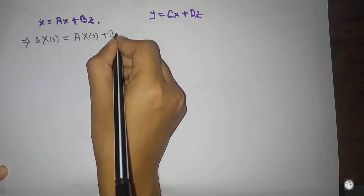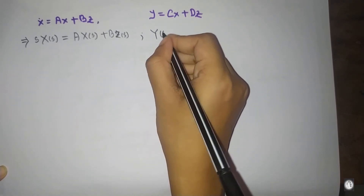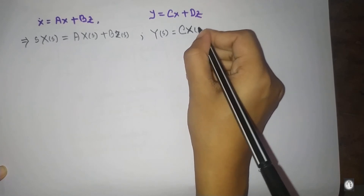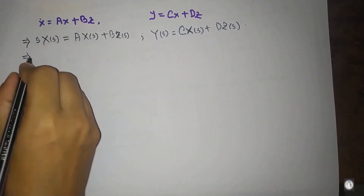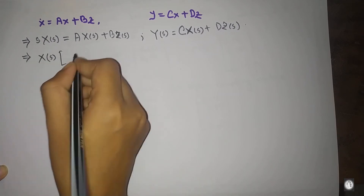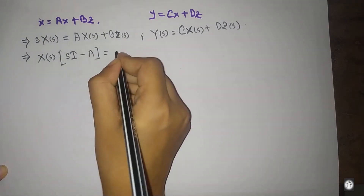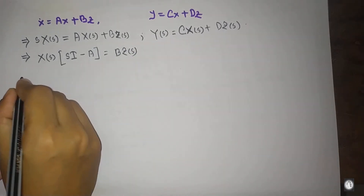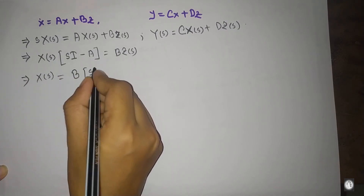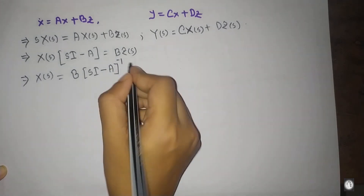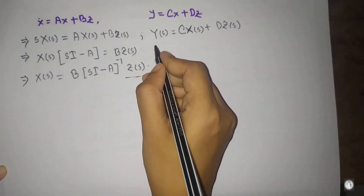Mathematically, a system can be represented through these equations. Taking the Laplace transform, we get sIx = Ax + Bz, so (sI - A)x = Bz. Therefore x(s) = (sI - A)^{-1} Bz, where I is the identity matrix and (sI - A) inverse gives us x of s.